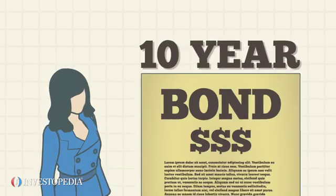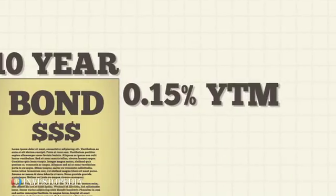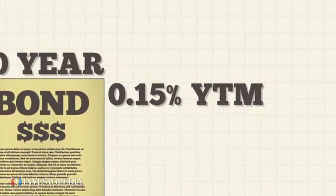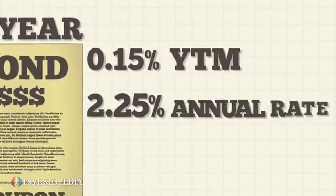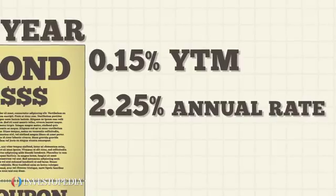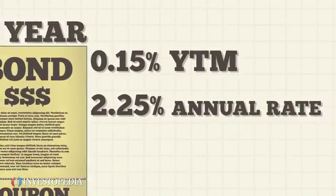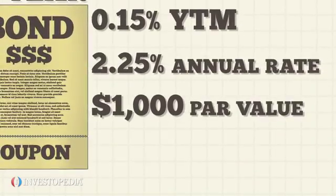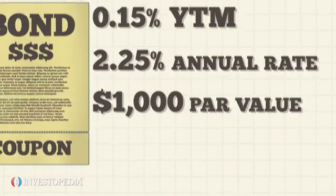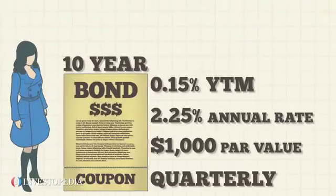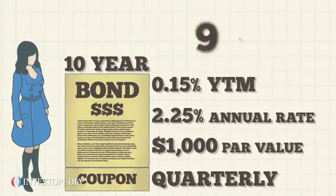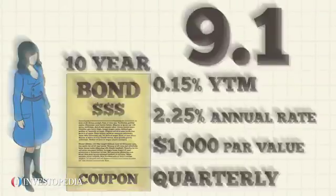Christine has a bond with a ten-year maturity, a zero point one five percent yield to maturity, a two point two five percent annual rate, a one thousand dollar par value, and quarterly coupon payments. Its duration is nine point one.